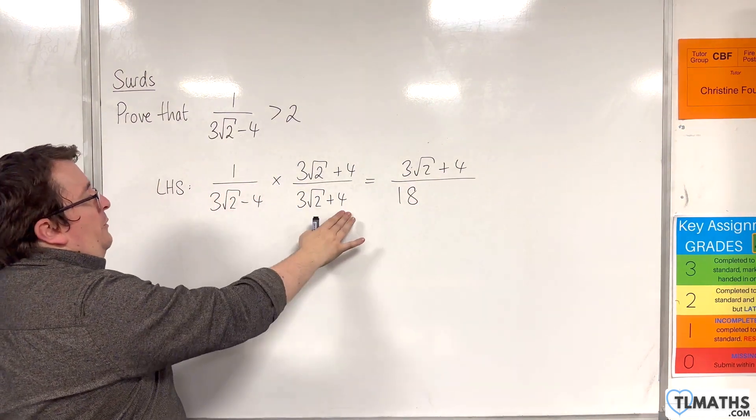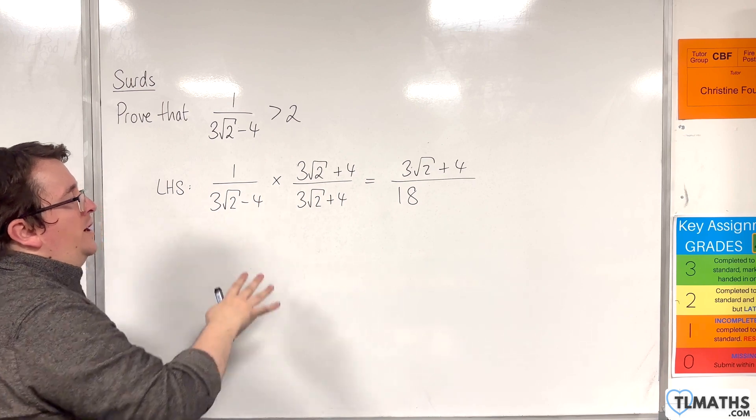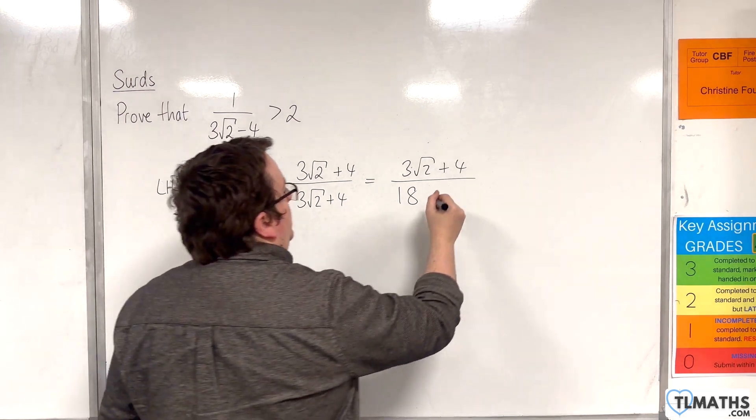3 root 2 times 4 and 3 root 2 times minus 4 will knock each other out. And we'll have minus 4 times 4, which is minus 16.